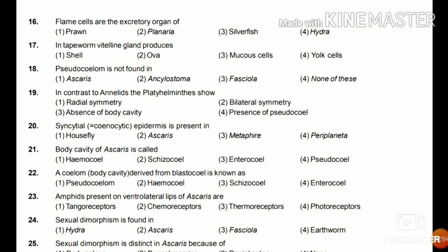Question 17: In tapeworm, the vitelline gland produces shell, ova, mucus cells, or yolk cells? The answer is yolk cells. The vitelline gland is mainly helpful in the formation of yolk, and the process of yolk formation is known as vitellogenesis.